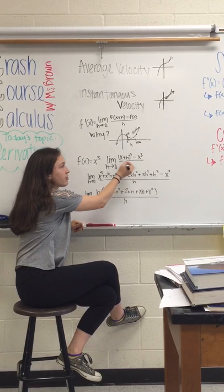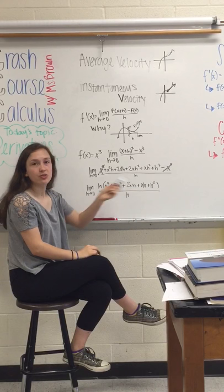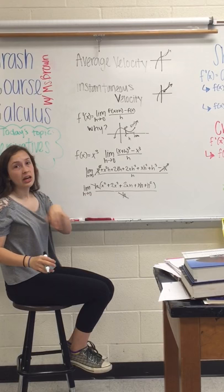So then, once you expand everything from the x plus h to the third, you can go ahead and cancel out the x to the third with the x to the third. Then, in the next step, bring out an h from all the terms, canceling out with the bottom.